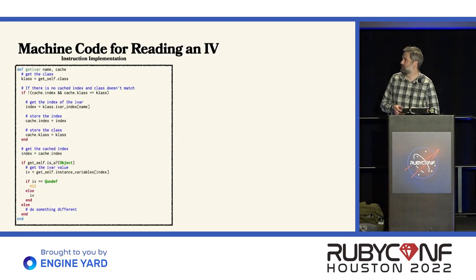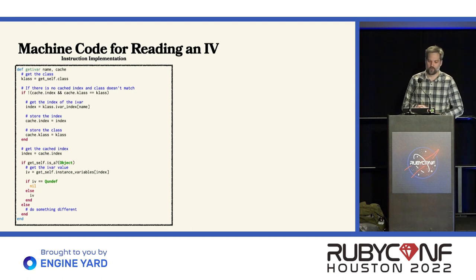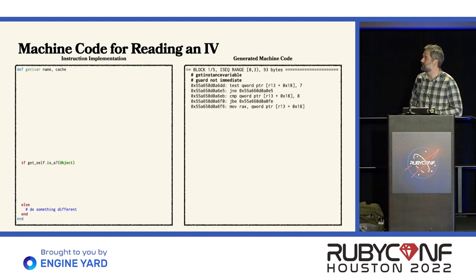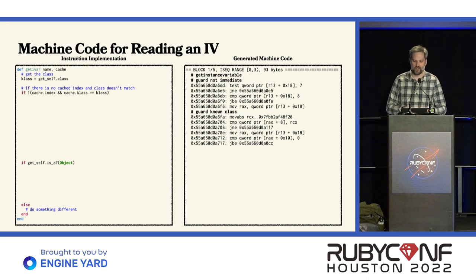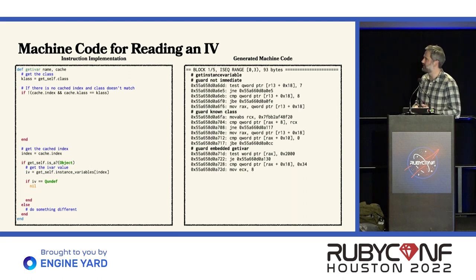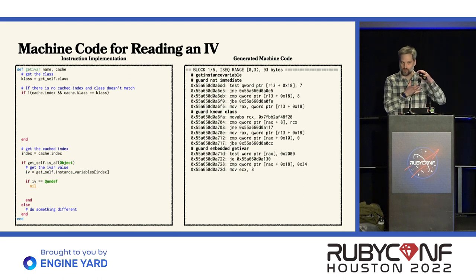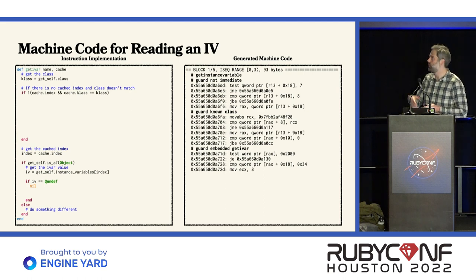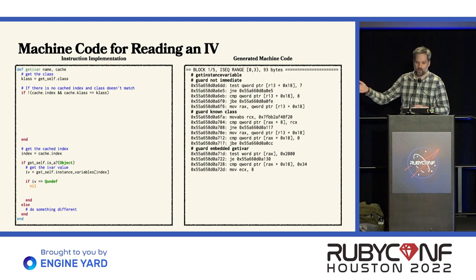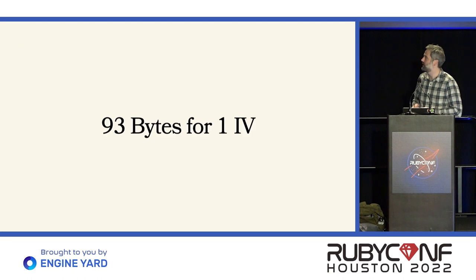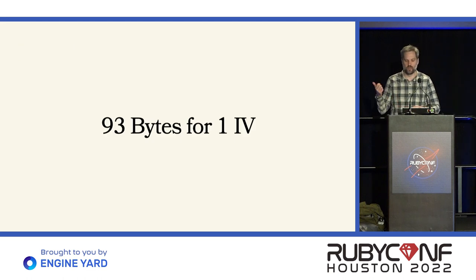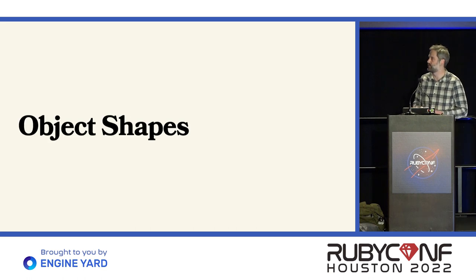Let's look at the machine code for reading an instance variable. The first thing we have to do is check whether this thing is an object, and emit machine code for that. Then we check whether the class matches what's in the cache. Then we check whether it's an embedded object or an extended object — are those three IVARs stored inside the object itself? We also have to check whether it's Q_UNDEF, because if it is we've got to return nil. And then finally, those last two instructions read the IVAR and push it onto the stack. So we have 93 bytes of machine code just for reading one instance variable. We can actually do much better, and that's where object shapes comes into play.